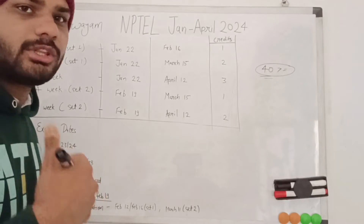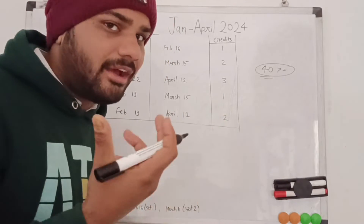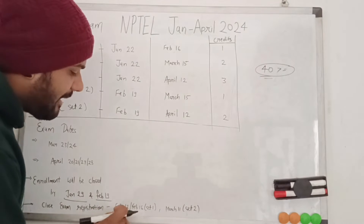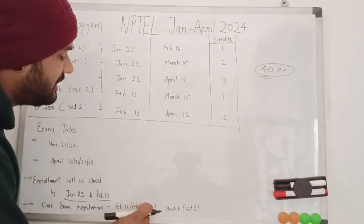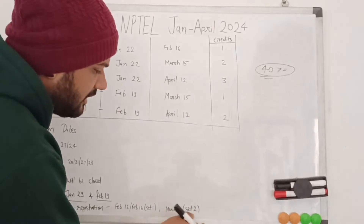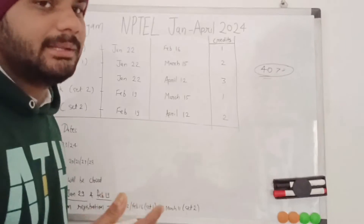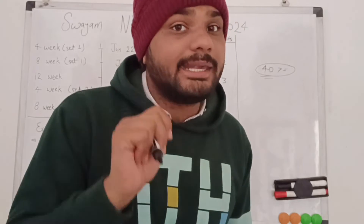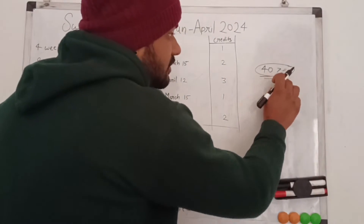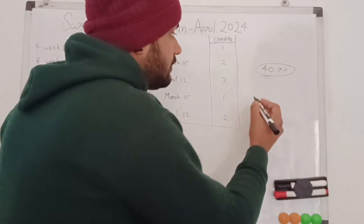When applying for the course to get a certificate and credits, you have to give the exam. The exam registration close date for Set 1 is February 12 and February 16. For Set 2, the last date to register for the four-week and eight-week exams is March 11th. The certificate criteria requires a score of 40 or more than 40 out of 100, divided between assignment and main exam.